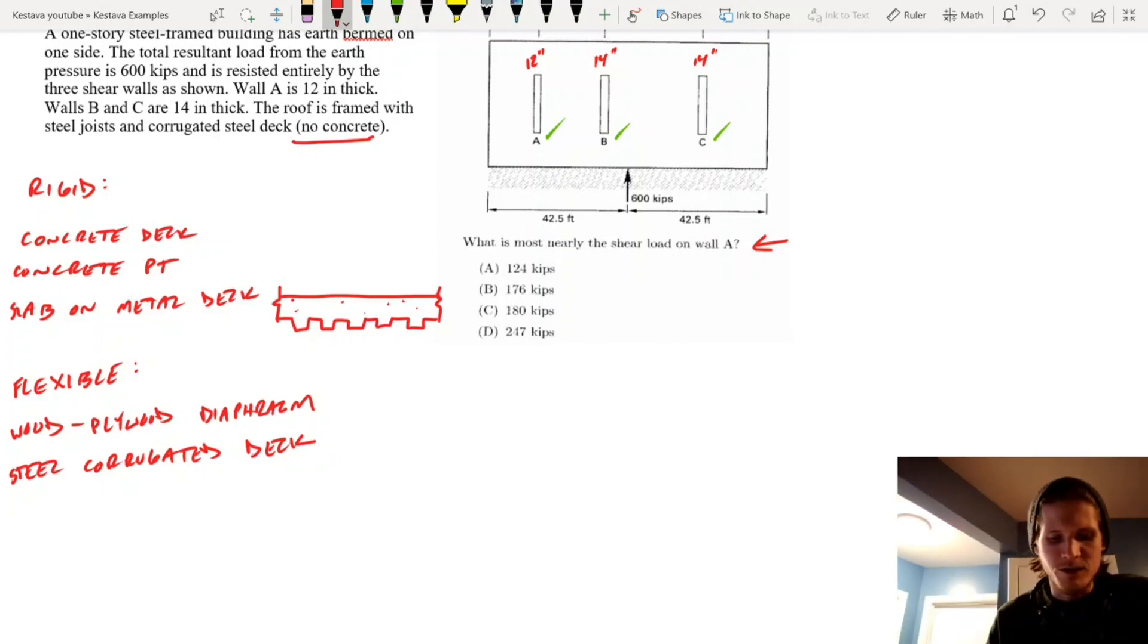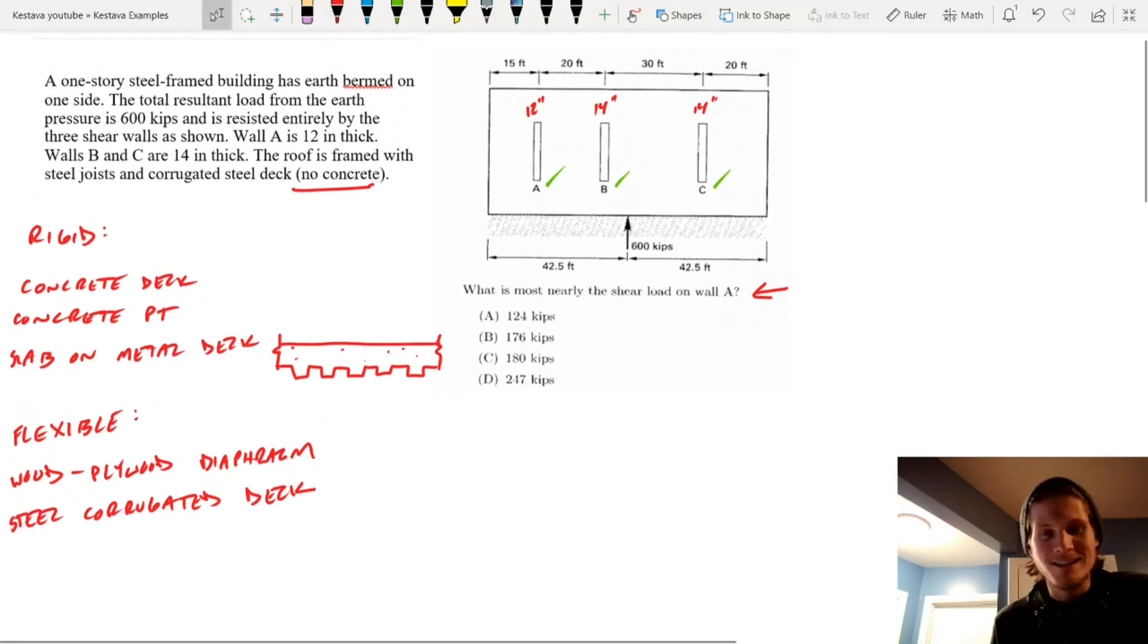It's really going to help you out in the future. So, getting back to this problem, even though they're setting up the problem to make it feel like it should be analyzed as a rigid diaphragm, it's not. This is just a corrugated steel deck with no concrete topping, so this is a flexible diaphragm. So, this actually becomes very, very simple.